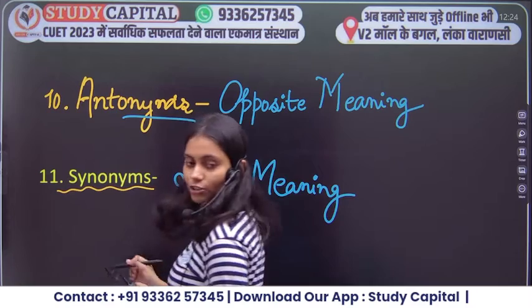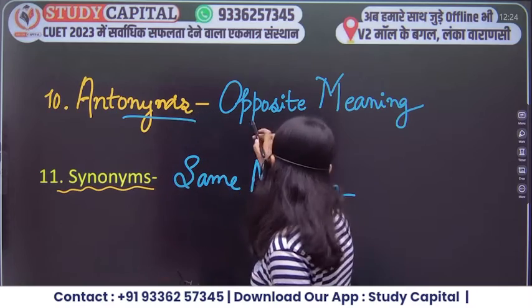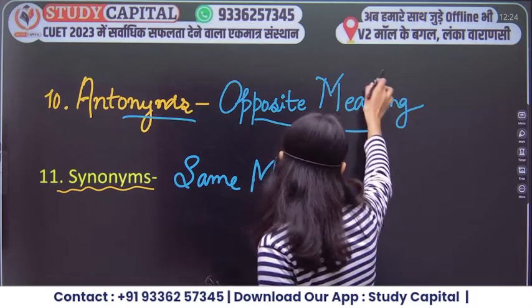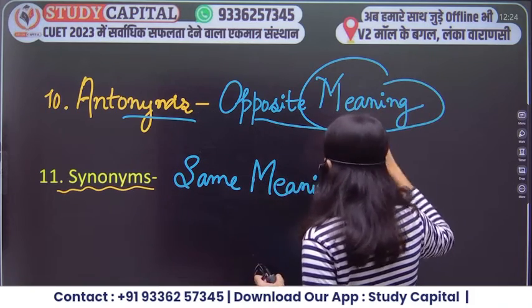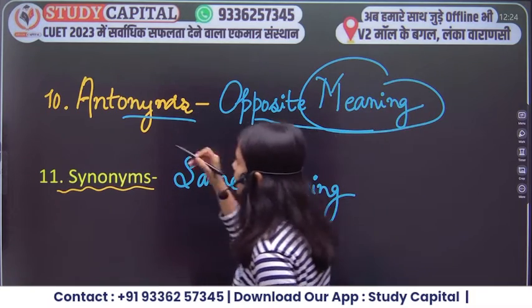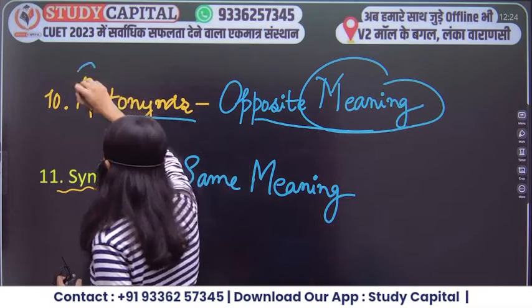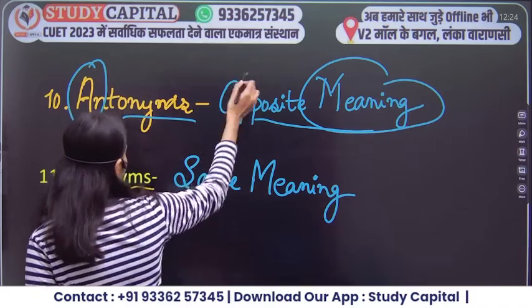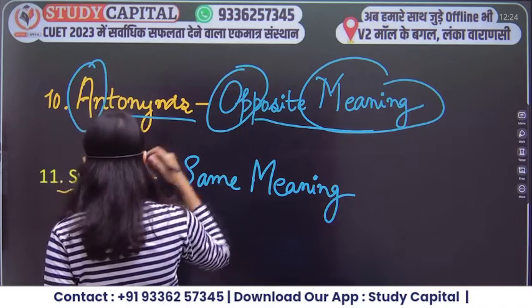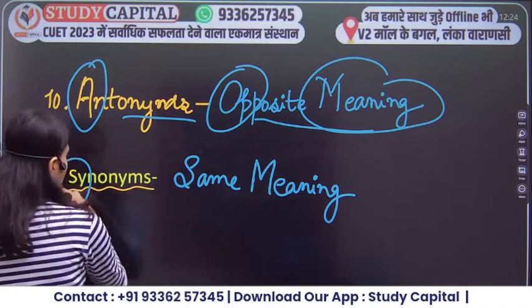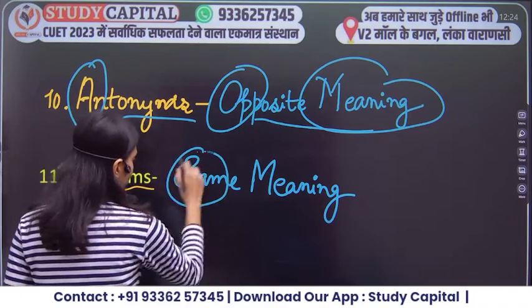Antonyms — what are antonyms? Antonyms are opposite meaning words. And synonyms mean same meaning words. Remember: antonym = opposite meaning, synonym = same meaning.